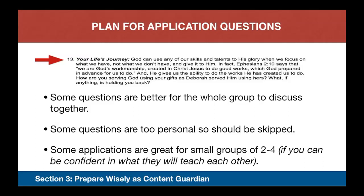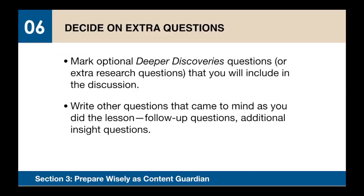So plan for the application questions. Step number six: decide on extra questions. Mark optional deeper discoveries questions or extra research questions that you will include because they will add to your discussion. Write other questions that you gained from your own study — good follow-up questions and additional insights. I usually write these in the margin of my book, draw a circle around them to catch my eye, and put a star on my plan.